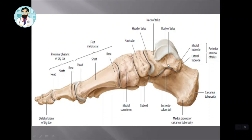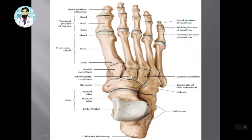After the Calcaneum, the head of the Talus articulates with the Navicular bone. The Talus has articulation between the Calcaneum and the Navicular bone. After that, the Navicular articulates with the Cuneiform bones — the Medial, Intermediate, and Lateral — and you can see that all three of them are articulating with the Cuneiform bones.